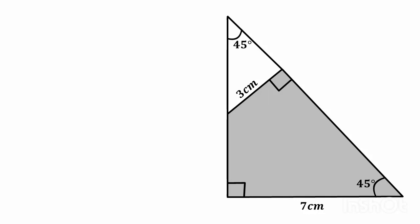The base of this right angle triangle is 7 centimeters, so the perpendicular will also be 7 centimeters. Look at the small triangle - in the small triangle the base is 3 centimeters, so the other side will also be 3 centimeters.